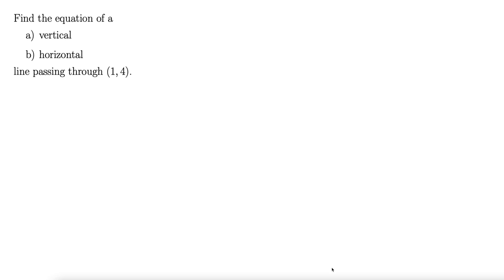Okay, find the equation of a vertical and a horizontal line passing through the point 1, 4.